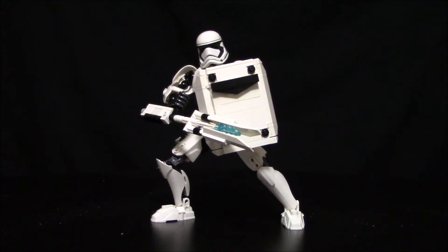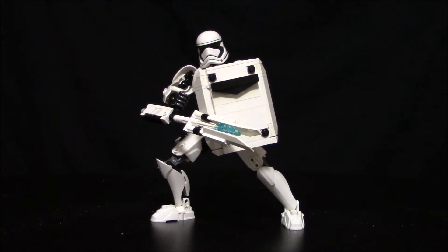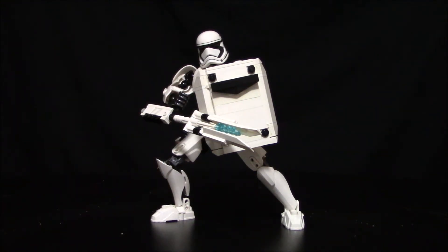Another Star Wars tutorial. We're going to build this cool riot baton so you can make your buildable construction figure first order stormtrooper into FN2199 and yell traitor! Let's get to building this.